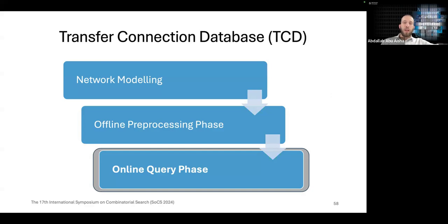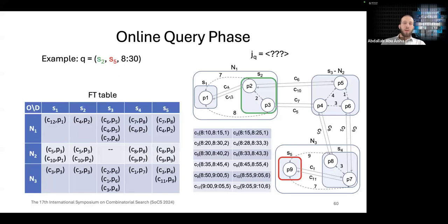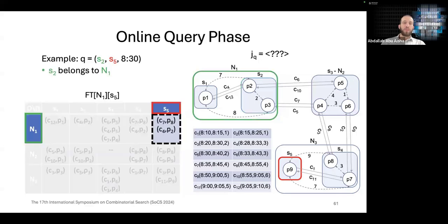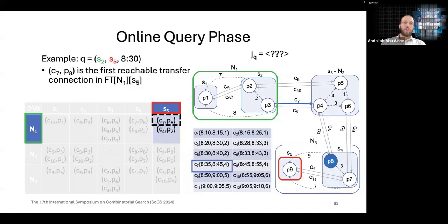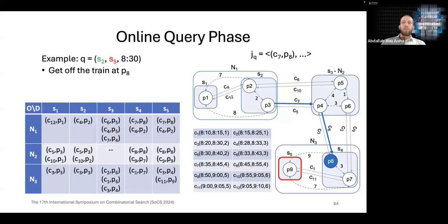Now, the last step would be to answer queries online. Let's have an example, which is a query from S2 to S5 departure time at 8:30. Of course, we're going to use our pre-computed FT table. Because S2 belongs to N1, the neighborhood N1, we look at the cell FT N1, S5. This cell has two transfer connections. The first reachable transfer connection will lead to the optimal journey. In this case, the first reachable transfer connection is C7 to C8. So connection C7 departs from S2, which is the origin station. So we don't need to do any transfers. We can always catch the connection C7. And we remain seated on C7 until we arrive at P8.